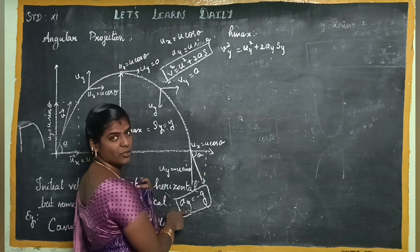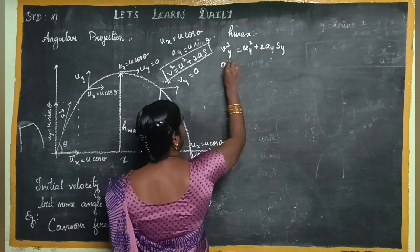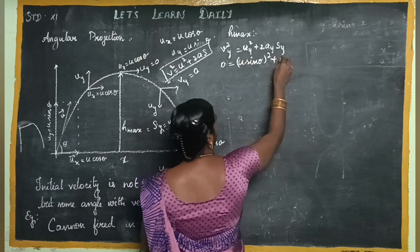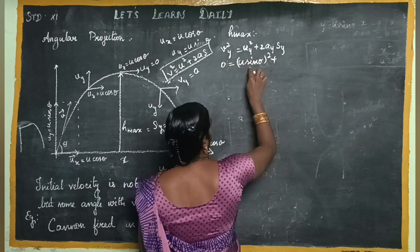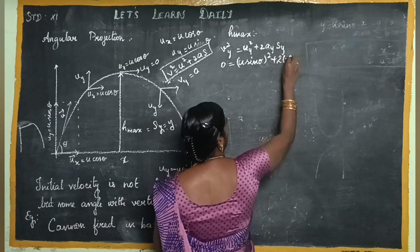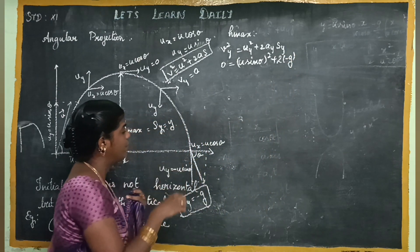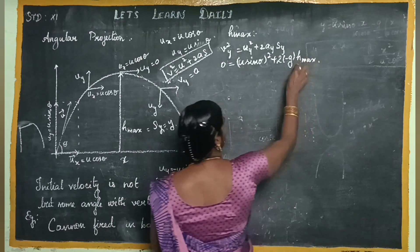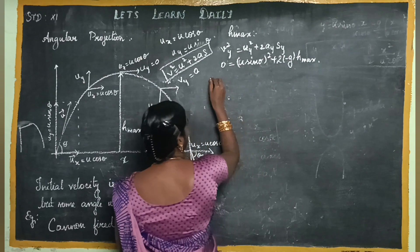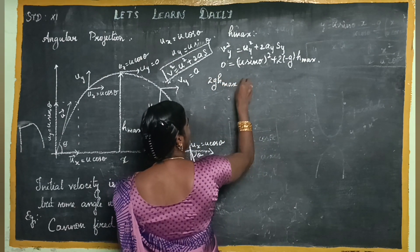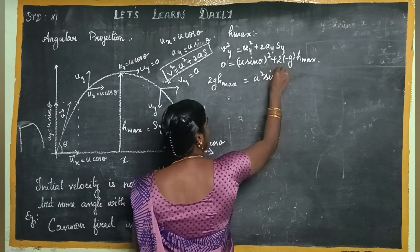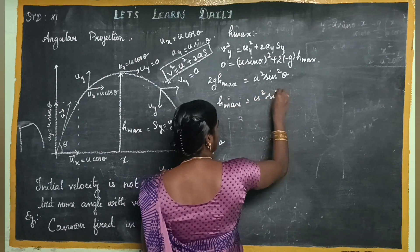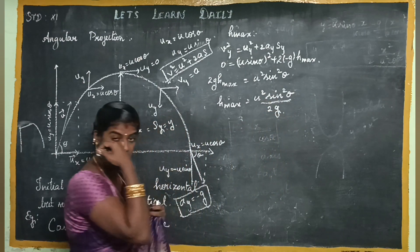We substitute: 0 equals (u sin theta) squared plus 2 times (minus g) times h_max. So 2g h_max equals u squared sin squared theta. Therefore, h_max equals u squared sin squared theta divided by 2g. This is the maximum height value.